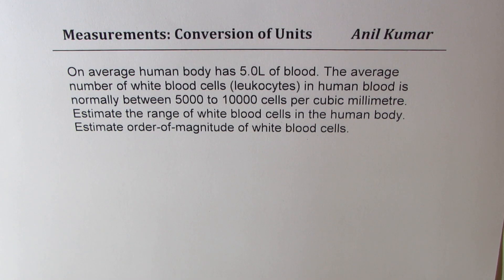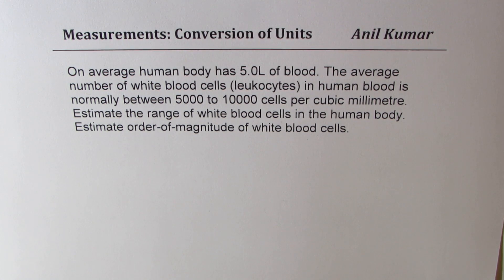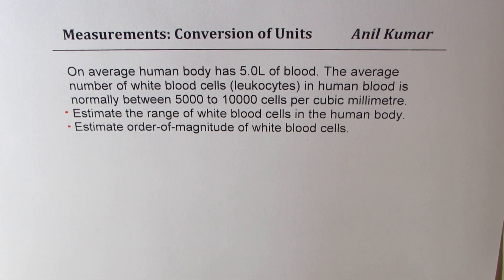I'm Anil Kumar. Welcome to my series on measurements and conversion of units. The question is: on average, the human body has 5.0 liters of blood. The average number of white blood cells, leukocytes, in human blood is normally between 5,000 to 10,000 cells per cubic millimeter. Estimate the range of white blood cells in the human body. Part B is to estimate the order of magnitude of white blood cells.